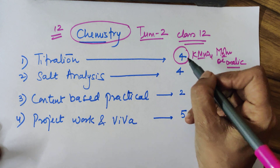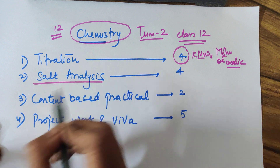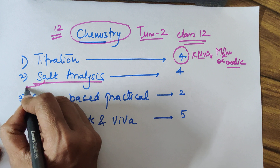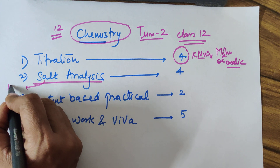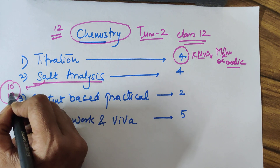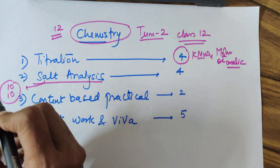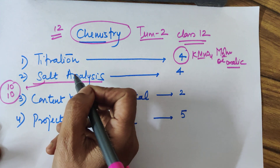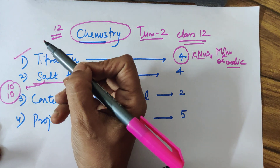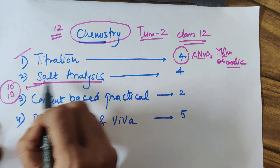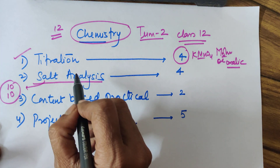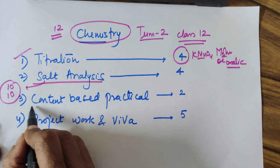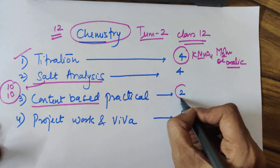Performing and reporting the titration results and writing the practical fetches you four marks. Salt analysis is next — it may include anions as well as cations. There are roughly 10 anions and 10 cations, so you have around 20 identities from which you can detect your salt, and you should know all the tests for them. Videos for titration, and all anions and cations in your syllabus, are already uploaded on my channel.